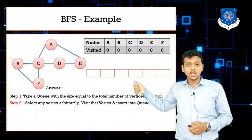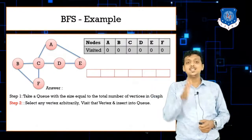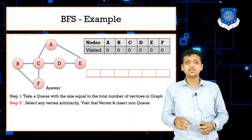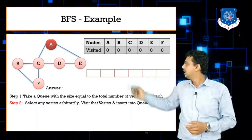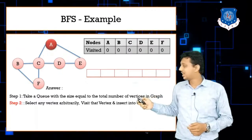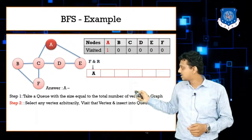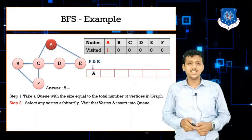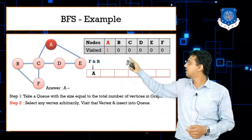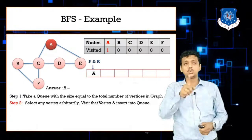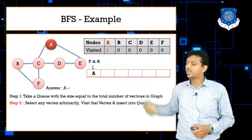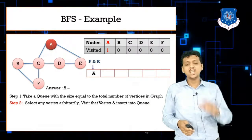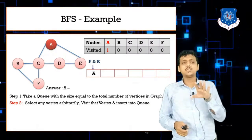Step two: select any vertex in arbitrary order. We choose node A. Insert A into the queue — the front and rear pointers both point to the same position since it is the first element. Then mark A as visited by setting its visited array value from 0 to 1.